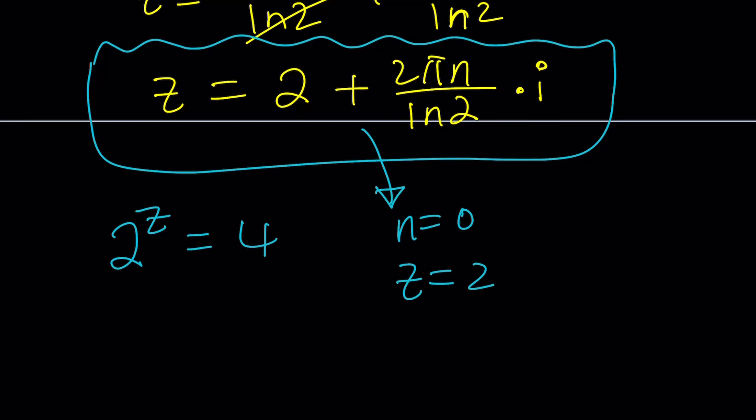But since n is any integer, we have infinitely many solutions for this in the complex world. That's what makes complex numbers awesome because we get infinitely many solutions from this simple equation.